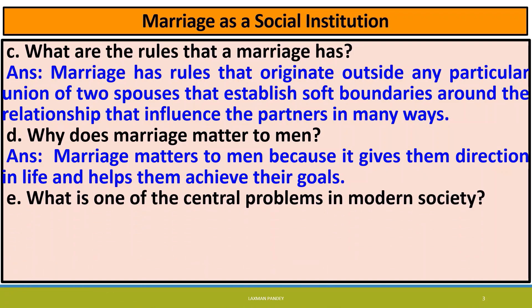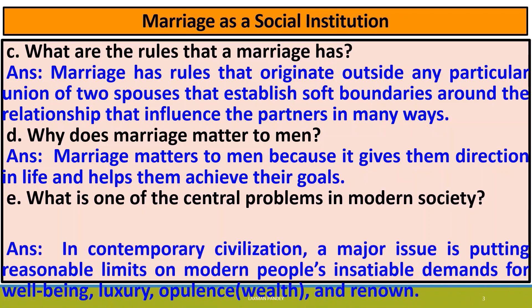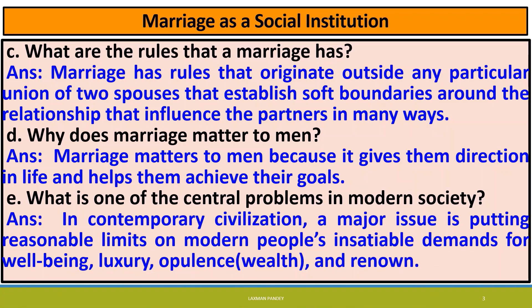What is one of the central problems in modern society? In contemporary civilization, a major issue is putting reasonable limits on modern people's insatiable demands for well-being, luxury, opulence and renown.